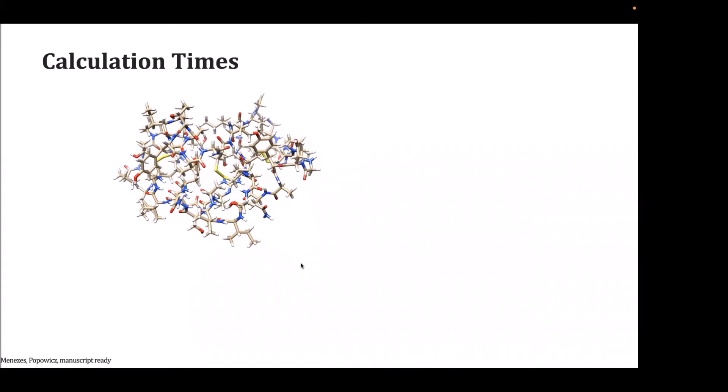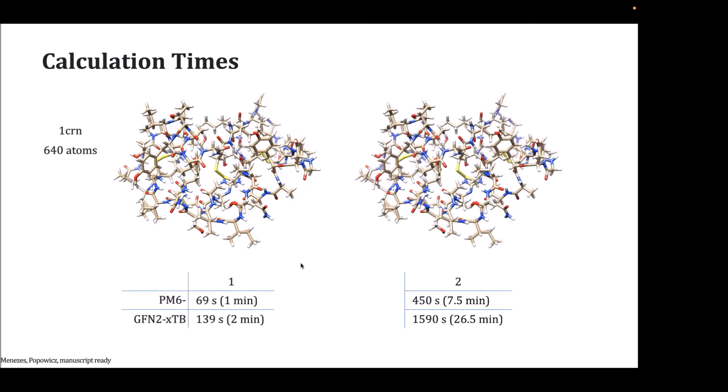Why did someone doing ab initio move to semi-empirical, the other extreme? The answer is speed and efficiency. Semi-empirical methods are extremely efficient. This protein, CRAMBIN, has 640 atoms after adding protons. I calculated it using my program on my PC at home. Calculation times were one to two minutes for some methods. This larger protein takes seven to twenty-six minutes. These two proteins together equal about 1200 atoms. Another protein with 1200 atoms takes 11 minutes because all atoms are close together.